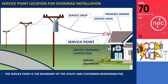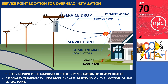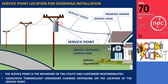For instance, if the service is situated near the service entrance, the corresponding conductors are referred to as service drop conductors. Conversely, if the service point is located at the transformer disconnect, these conductors are known as service conductors.